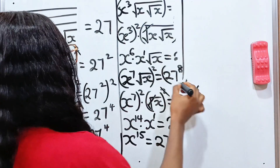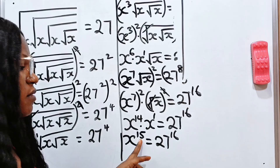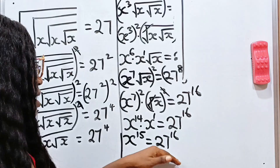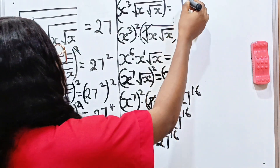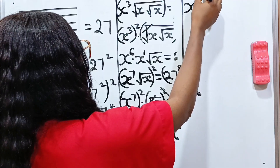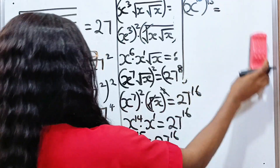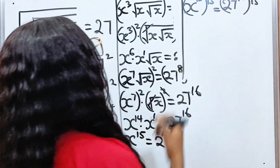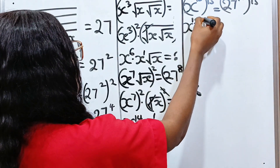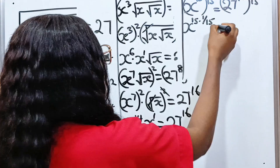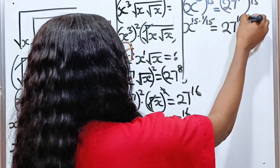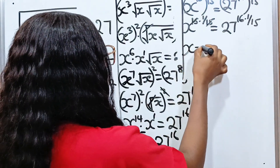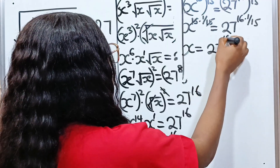Combining: 14+1 = 15, so x to the power of 15 equals 27 to the power of 16. Now we need the value of x. We raise both sides to the power of 1/15 — the inverse of 15. So x to the power of 15 × (1/15) equals 27 to the power of 16 × (1/15). The 15s cancel, leaving x equal to 27 to the power of 16 over 15.